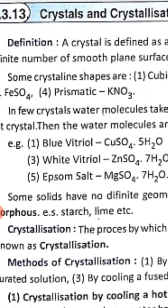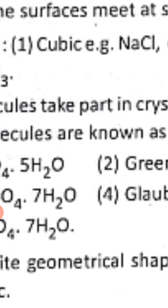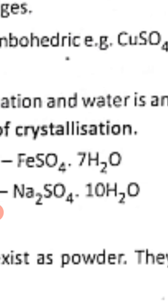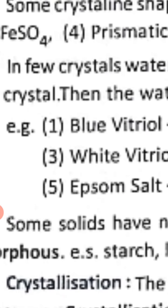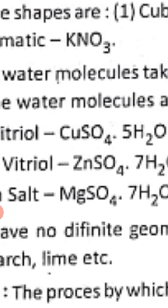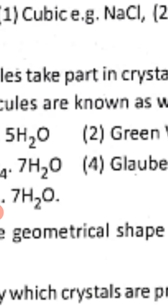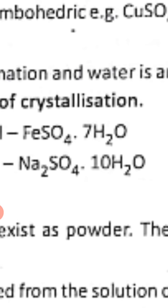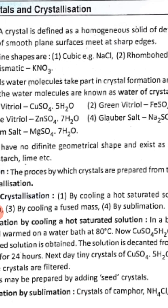Blue vitriol (copper sulphate) contains 5 H₂O. Green vitriol (ferrous sulphate) contains 7 molecules of water. White vitriol (zinc sulphate, ZnSO₄) contains 7 H₂O. Similarly, Glauber's salt (Na₂SO₄) contains 10 H₂O.